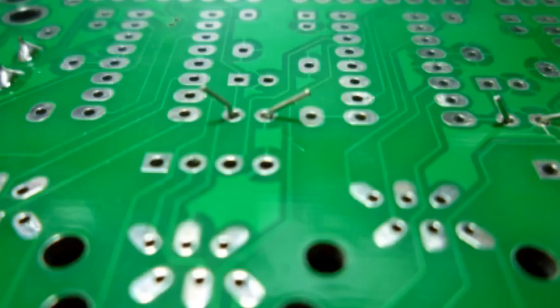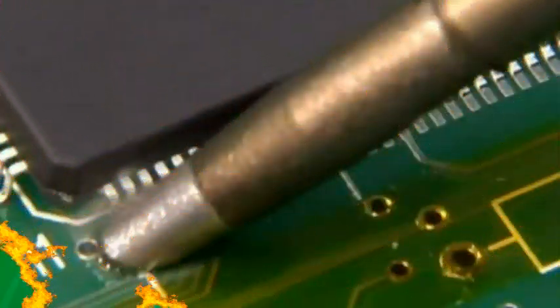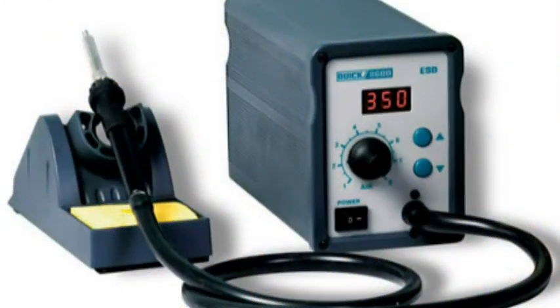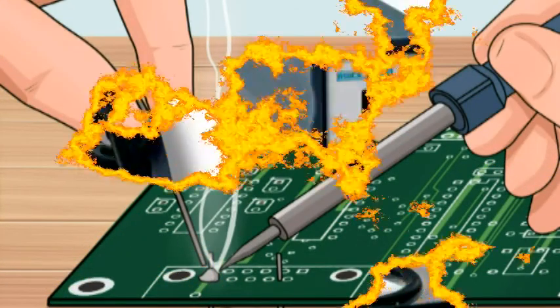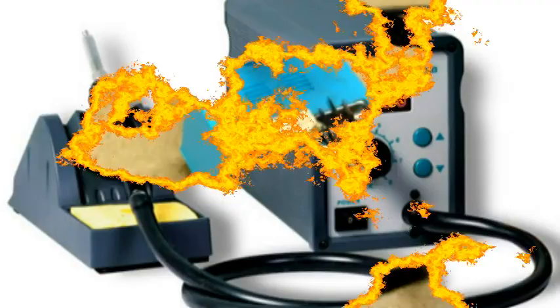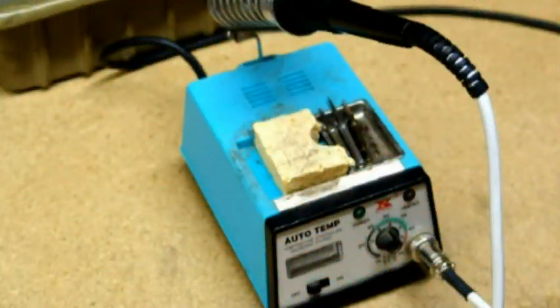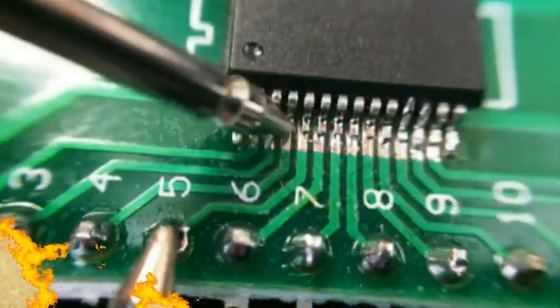Types of soldering irons include soldering pencil, soldering station, soldering system, repair stations, and soldering guns. Temperature control: A professional-style temperature-controlled iron with interchangeable tips and 50 watts or more of power is ideal.